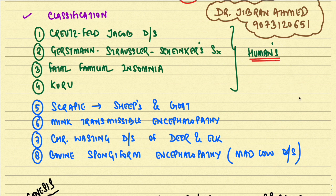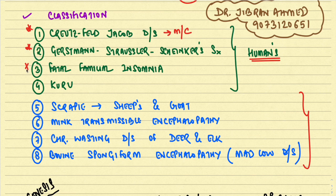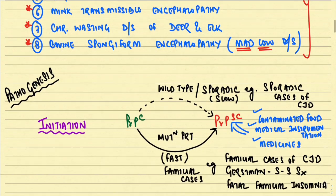Coming to the basic classification of prion's disease: those occurring in humans include Creutzfeldt-Jakob disease (the most common variety), Gerstmann-Sträussler-Scheinker syndrome, fatal familial insomnia, and kuru. Among animals, we see scrapie in sheep and goat, mink transmissible encephalopathy, chronic wasting disease of deer and elk, and bovine spongiform encephalopathy — very commonly called mad cow's disease.